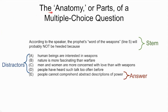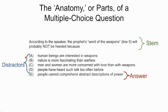Here we have the anatomy or parts of a multiple choice question. We have the first part, which is the stem — the question or incomplete statement that prompts student thinking. In this case, we have one correct answer, located here as choice E. That makes the other choices — A, B, C, and D — the distractors, or in other words, plausible but incorrect answers.